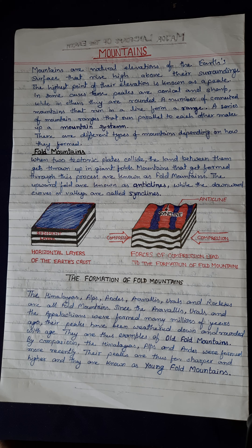Fold mountains: when two tectonic plates collide, the land between them gets thrown up in giant folds. Mountains formed through this process are known as fold mountains. The upward folds are known as anticlines, while the downward curves or valleys are called synclines.